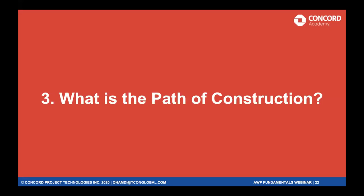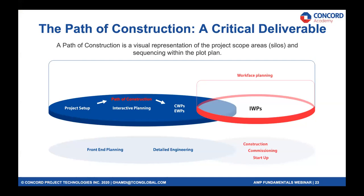I want to take time to explain what the path of construction is, because it is a key deliverable that tends to be forgotten in how AWP is taught. Owners and contractors we've worked with — even discipline contractors — have added the path of construction as a required deliverable at approval or assurance gates. This document, when you look at it, will tell you whether the project is going to be predictable or not. The path of construction is that deliverable with the visual representation of your areas and breakdown, underlining your logic of construction and connecting engineering, procurement, operations, and constraints into your construction plan.